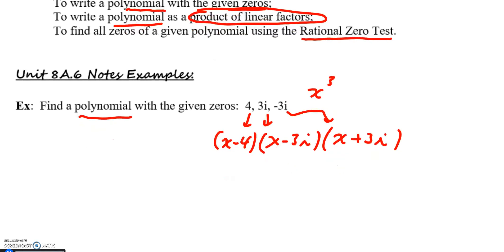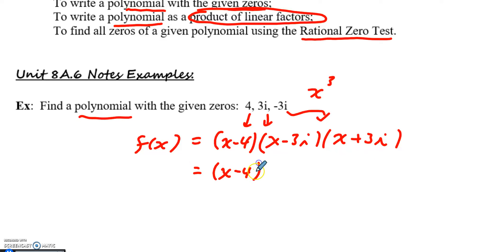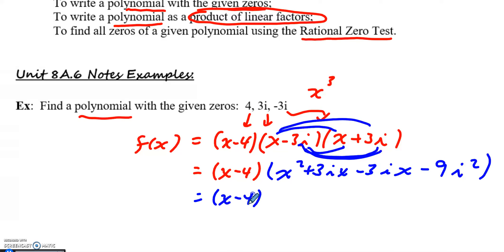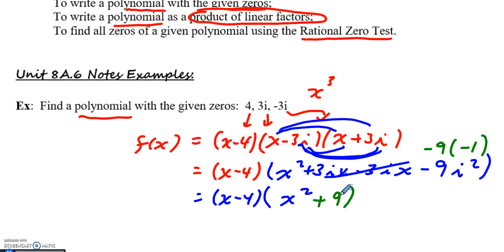If this example had said leave in factored form, I would be done here, but it didn't specify. So we can completely multiply this out to make sure it is an x to the third function. I would leave x minus four as is and distribute the two imaginary roots first to get rid of the i. I would get x squared plus 3ix minus 3ix minus 9i squared. These two middle terms cross out, and since i squared is negative 1, this is really x squared plus 9.